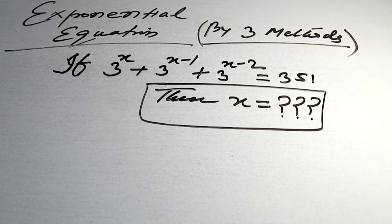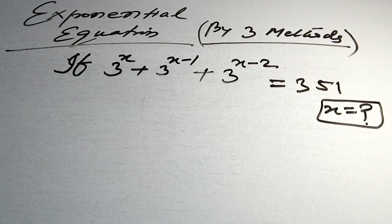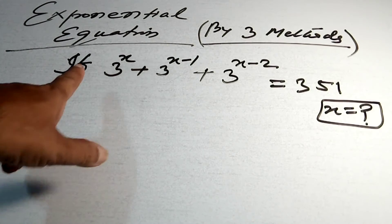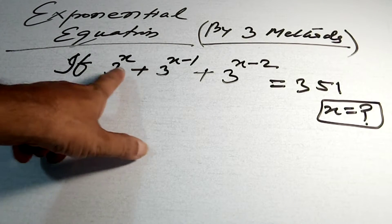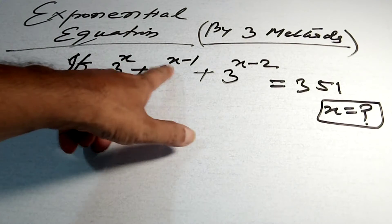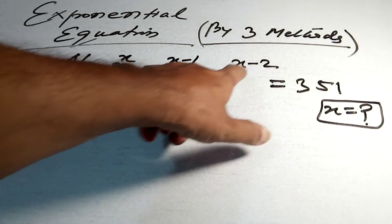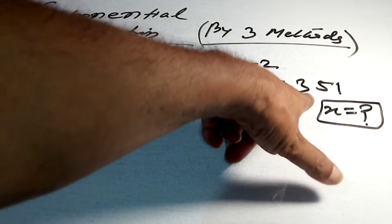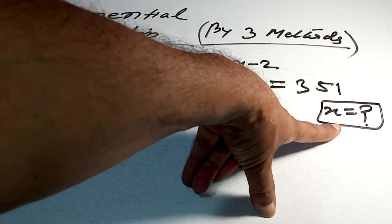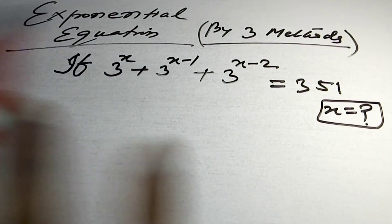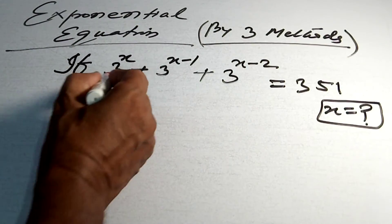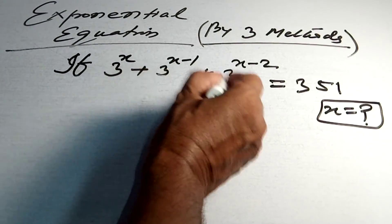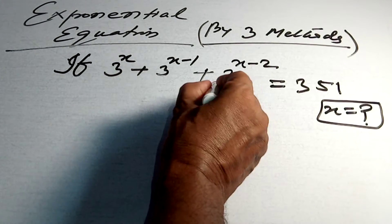See how I solve this one. There is a condition: if 3 to the power x, plus 3 to the power x minus 1, plus 3 to the power x minus 2, equals 351 — you have to find the value of x. There are three terms here.